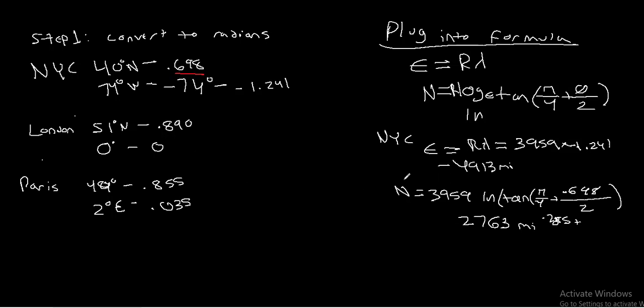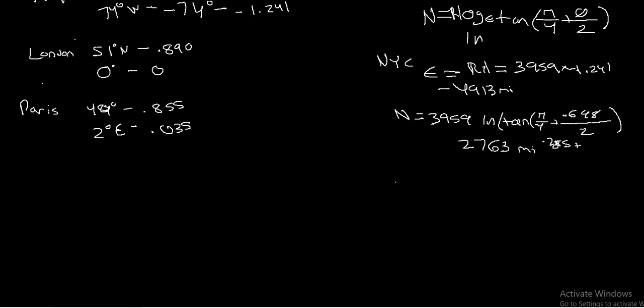Let's go ahead and look at London. So London, the Easting—London is actually sitting on the prime meridian, so it's actually going to be 0. We don't have to do any math there. But the Northing, again, we have this 3,959 times the natural log of the tangent of pi over 4 plus, in this case, our theta is 0.89 over 2.